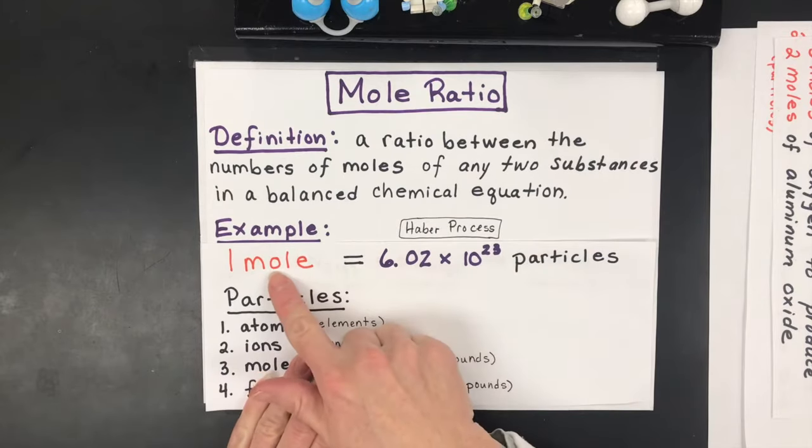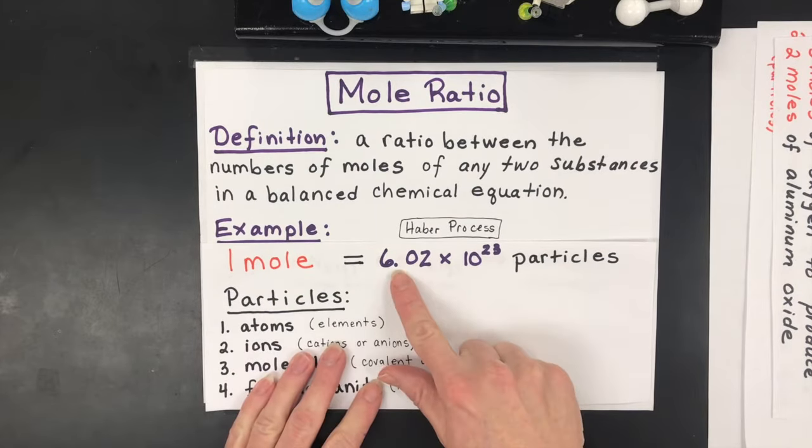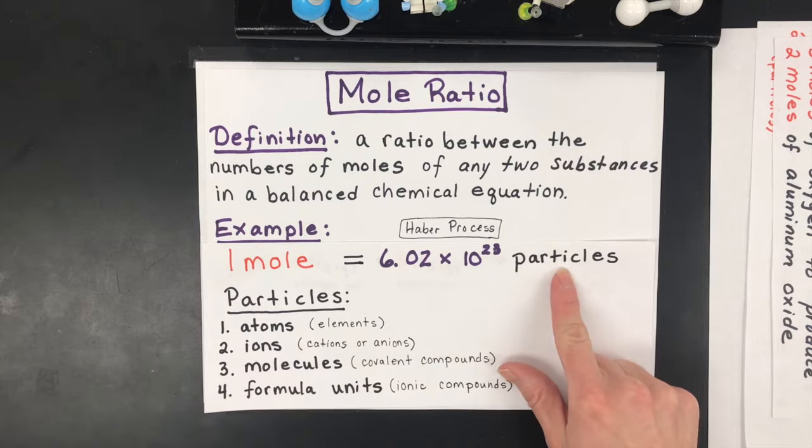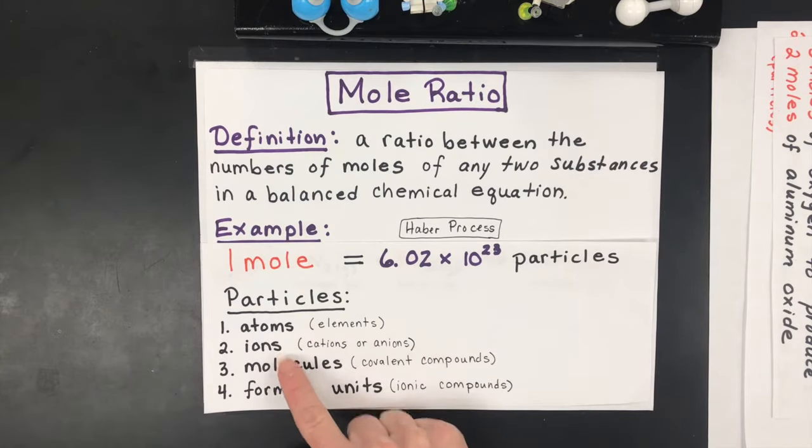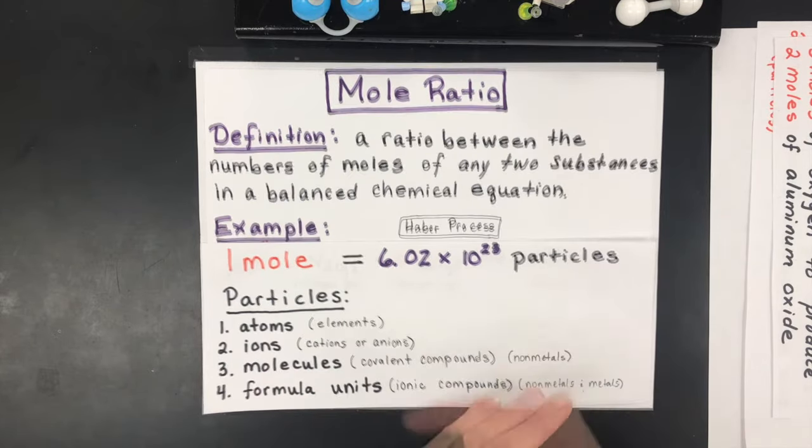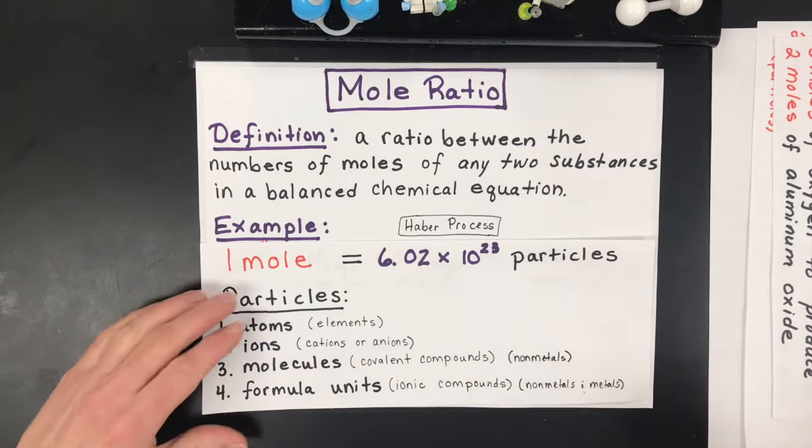The one thing you may want to go back to is defining what a mole is. It's 6.02 times 10^23 particles, and those particles can be atoms, ions, molecules, or formula units. That's just a quick review of what is the mole and what are particles.